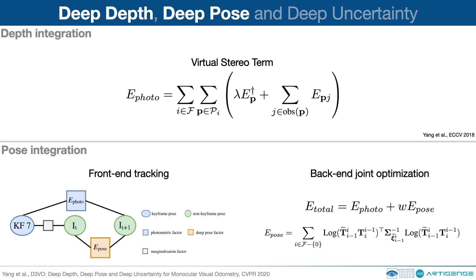The predicted depth maps are integrated by using a virtual stereo term inspired by deep virtual stereo odometry. The predicted poses are integrated into both the front-end tracking and back-end joint optimization. For the front-end tracking, we build a nonlinear factor graph for direct image alignment. For the back-end optimization, we add a pose-prior term in addition to the photometric term. The total energy is then minimized with the Gauss-Newton method.